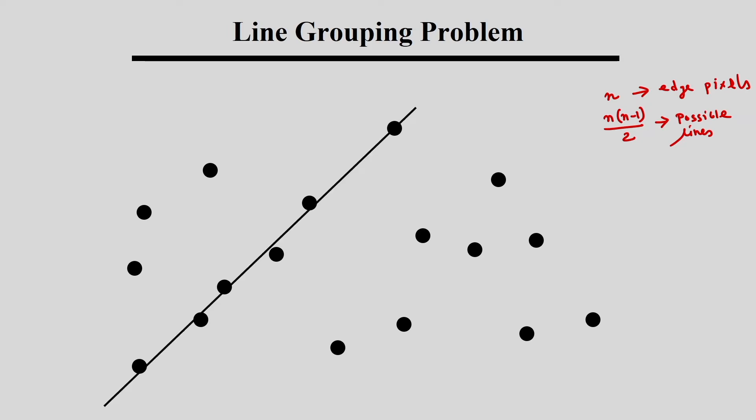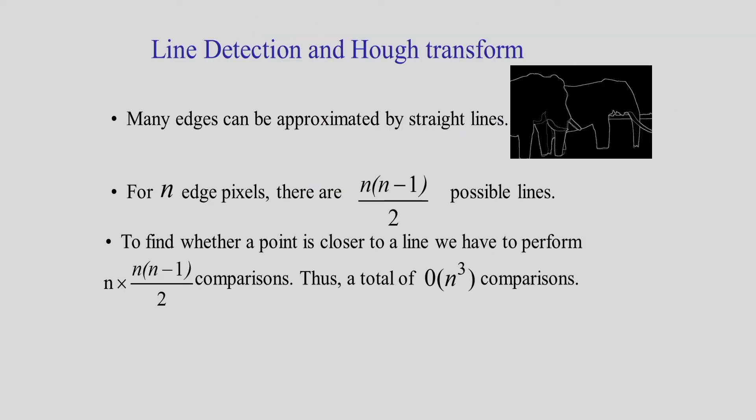I am considering one line and checking whether a particular pixel is close to that line — this is the line grouping technique. The problem is that if I consider n edge pixels, the number of possible lines by the grouping process is n(n−1)/2, which is computationally complex.